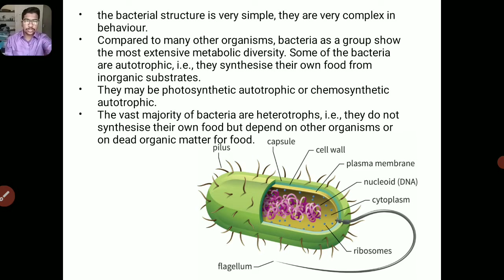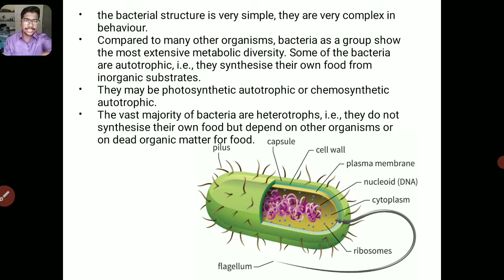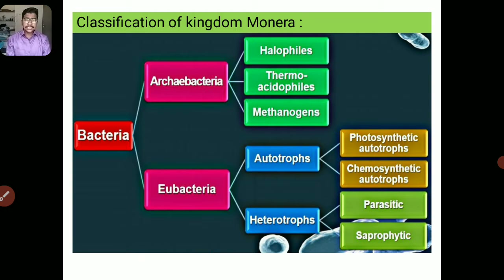Here, observe the structure of bacteria. The genetic material is in the nucleoid. The cytoplasm is present, along with the plasma membrane and the cell wall. They have pili — the hair-like structures. Ribosomes are also present. Observe the flagellum, which is the locomotory organ.